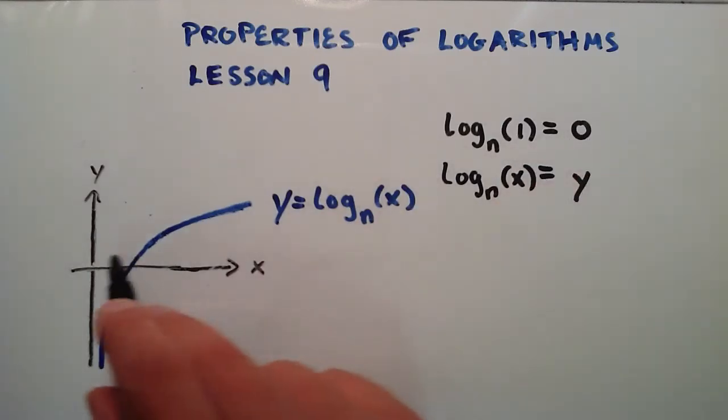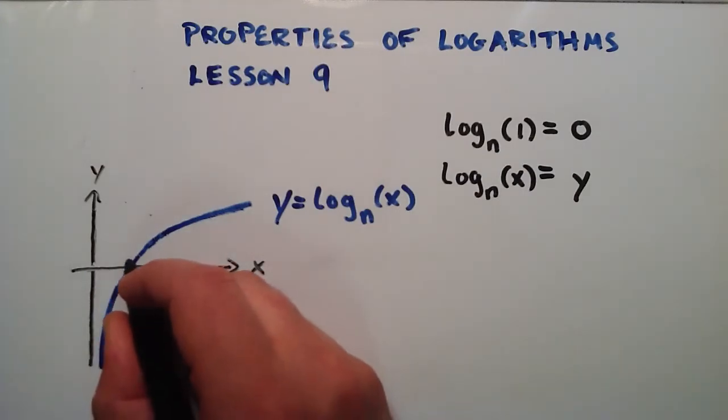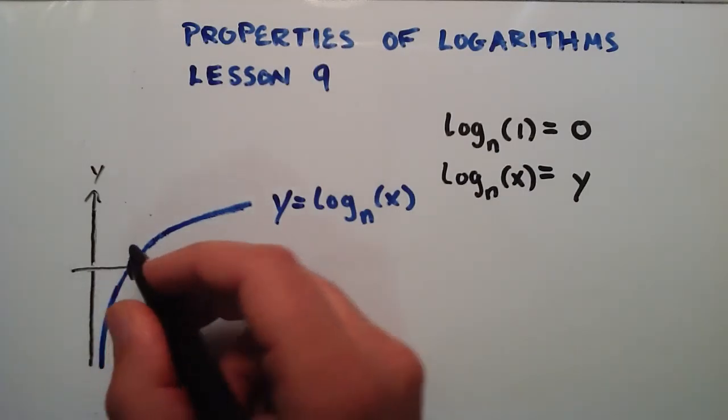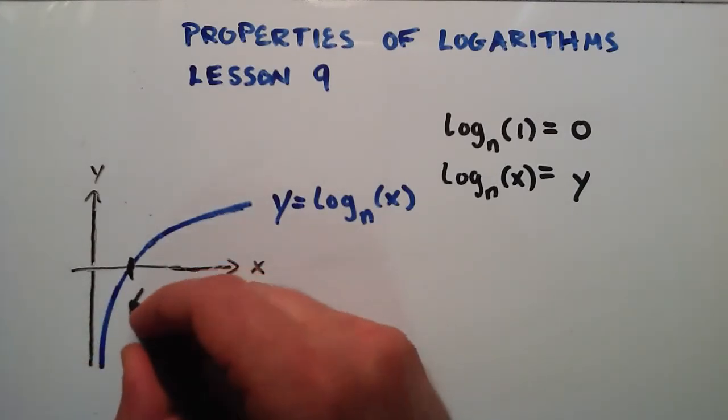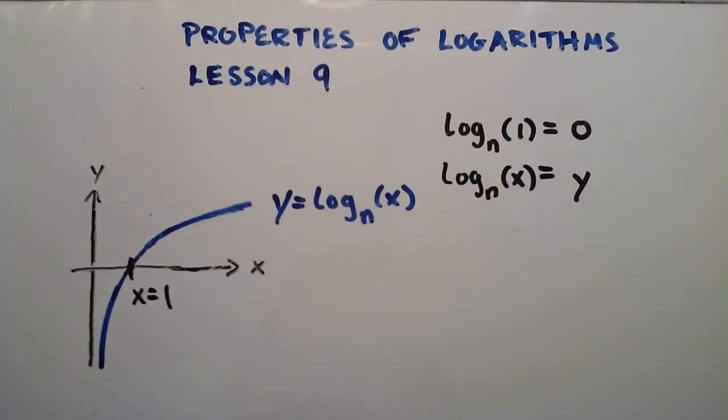So that means that if we go over one unit in the x, we cross right here where our function has a y value of 0. So that's essentially what that means graphically.